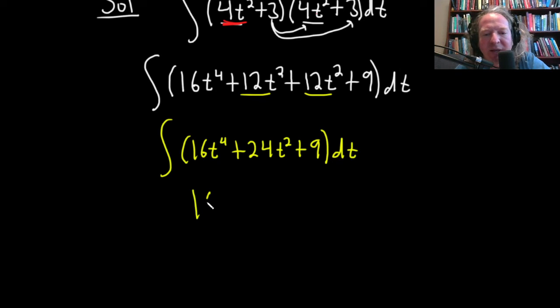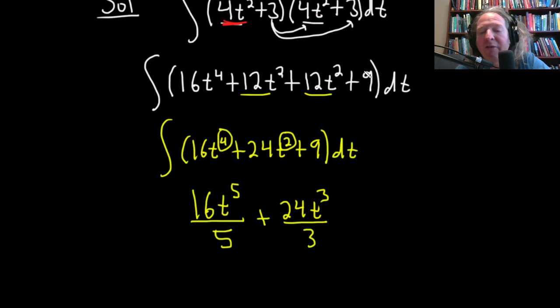And so this is going to be 16t to the 5, okay? And then you just divide by the number, right? You just basically take this and add 1. 4 plus 1 is 5. Then you divide by the result. Same thing here, plus 24t squared. Take this number and add 1. 2 plus 1 is 3. Divide by the result. And then whenever you have a number by itself, you just tack on a t. So plus 9t. Plus our constant of integration, capital C.